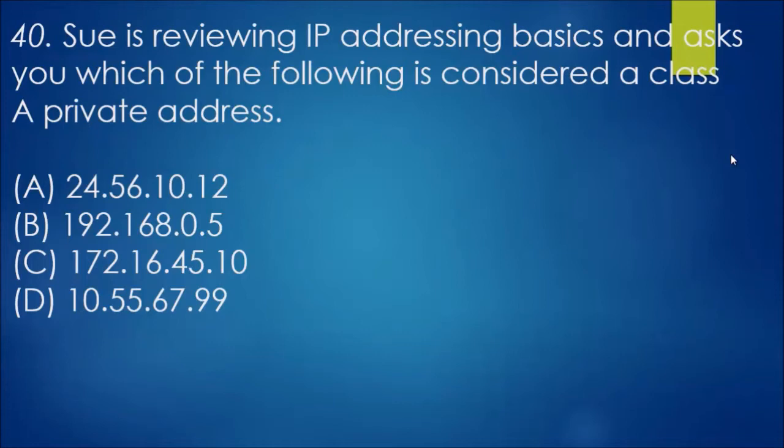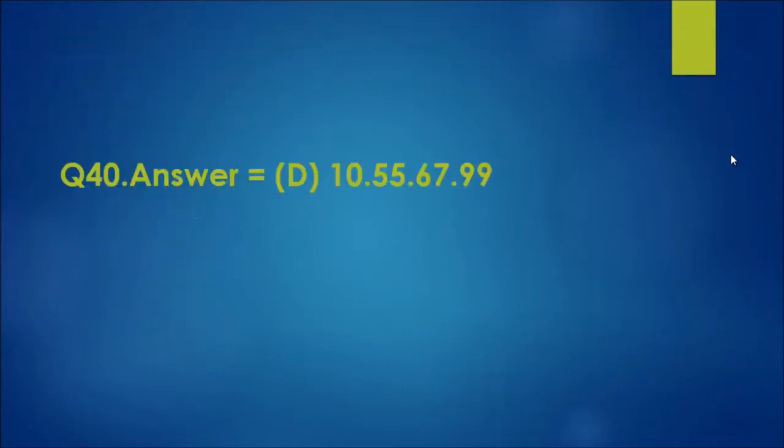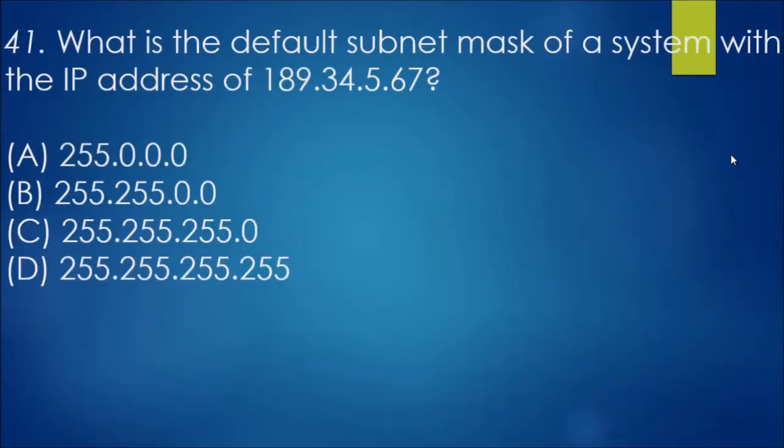We know 192.168.0.5 is a class A private address, and that'll be the private address as C being the answer. 10.55.67.99 will be the answer because it starts between the range of 1 and 127.